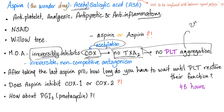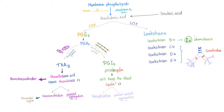When there is no platelet aggregation — primary hemostasis — there is no blood coagulation, secondary hemostasis. Because if one causes two, and if you inhibit one, you don't get two. Does aspirin inhibit cyclooxygenase 1 or cyclooxygenase 2? The answer is both. In the arachidonic acid pathway, aspirin works by inhibiting the cyclooxygenase. When there is no cyclooxygenase, there is no thromboxane A2. When there is no thromboxane A2, there is no vasoconstriction and no platelet aggregation.